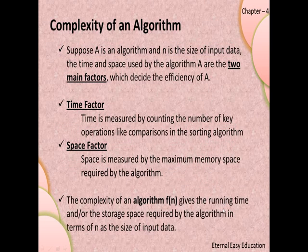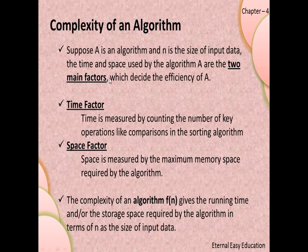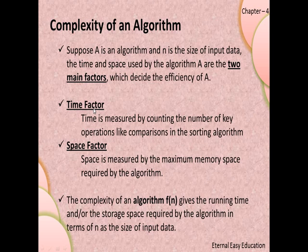Complexity of an algorithm: suppose A is an algorithm and n is the size of the input data. The time and the space used by algorithm A are the two main factors which decide the efficiency of the algorithm. The efficiency is calculated based on the time and the space used by the algorithm.